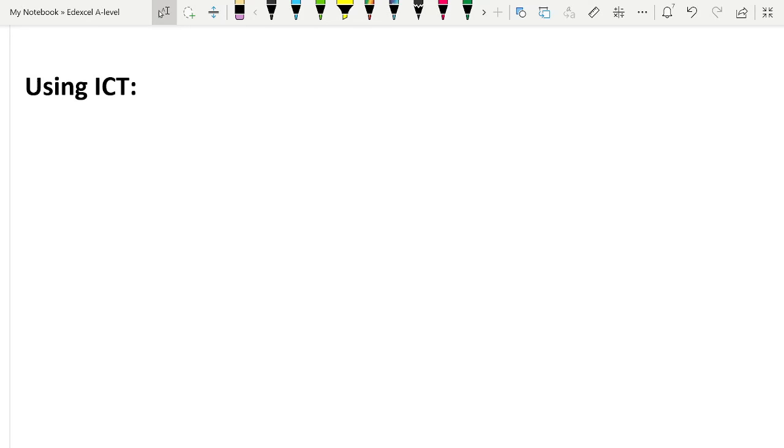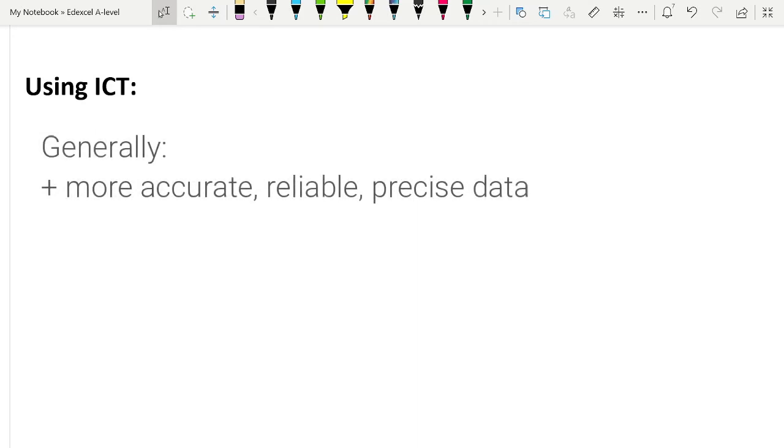In terms of ICT and the general use of ICT for experiments, there are a lot of situations in which we could use ICT to make our experimental data more accurate, more reliable, more precise. Make sure that you know the definitions of these terms. However, it is generally not enough, like I said with the parallax error, to just trot out these pat phrases and think you're going to get marks for it.